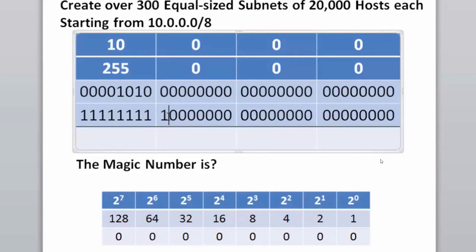If we borrow one bit, we have two subnets. Now we have four subnets, eight subnets, 16, 32, 64, 128, 256, 512. If we borrow nine bits, we'll have 512 subnets that we create, and that will be sufficient to meet the demand for 300 equal size subnets.